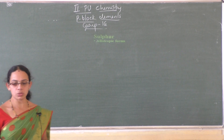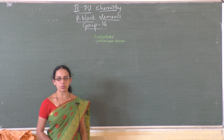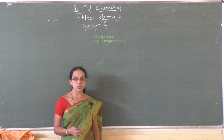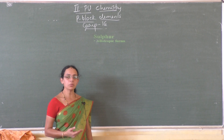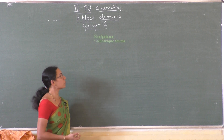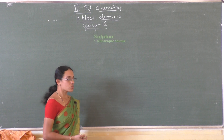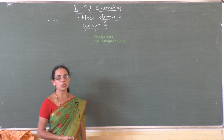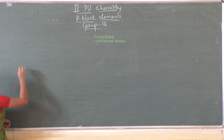Next, let us move on to the next element present in group 16, that is sulfur. The elements present in group 16 are oxygen, sulfur, selenium, tellurium, polonium and livermorium. Sulfur is the second important element of group 16 and it exists in many allotropic forms, of which the most important are alpha sulfur and beta sulfur.